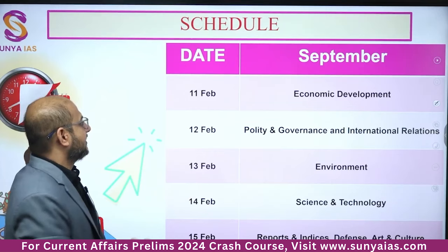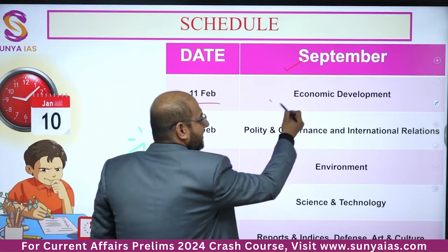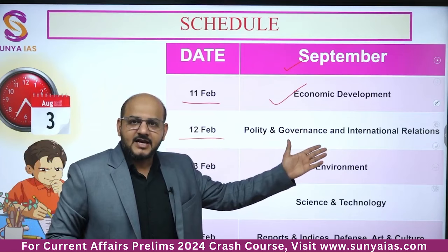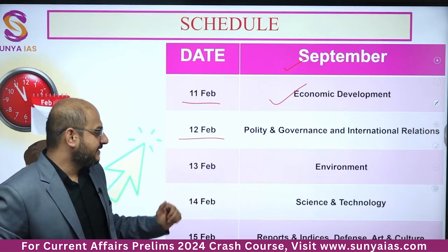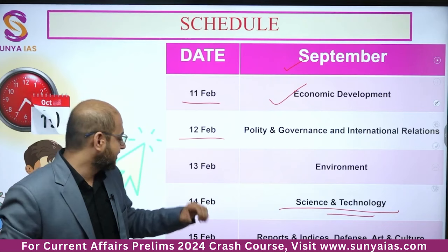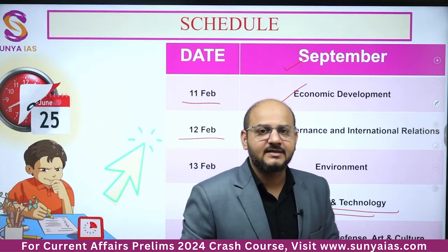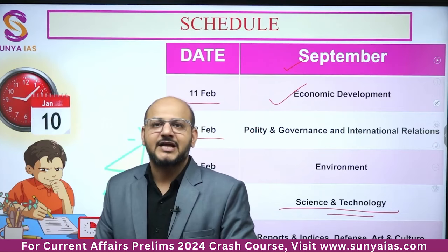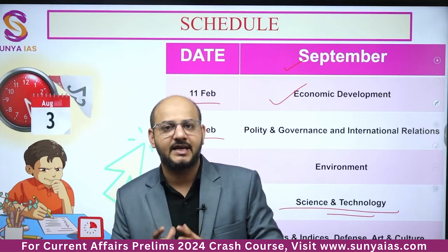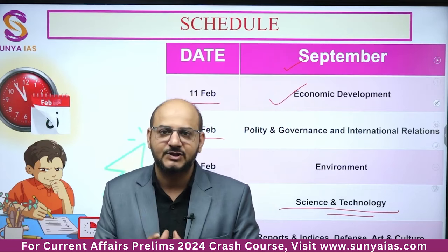For the month of September, on the 11th we will be discussing economic development current affairs; 12th, polity, governance and international relations; 13th, environment and ecology; 14th, science and technology — very important weightage for the examination; and 15th, reports, indices, defense, and miscellaneous topics like government schemes. A current affairs crash course is also running live with comprehensive in-depth coverage, which you can join from Shoonia IS.